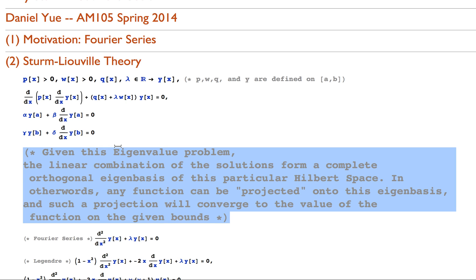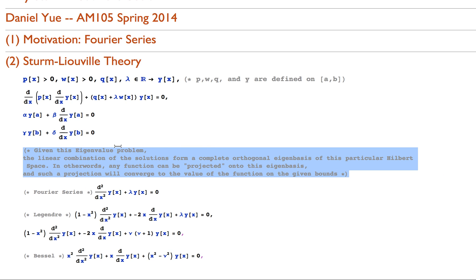Note that the functions have to be defined on a to b with some boundary condition involving a linear combination of the function and its derivative at that point. This is kind of cool. We know that works in Fourier series, we've seen it work before, but we're actually going to look at a couple of examples that aren't Fourier series that are pretty famous, known as Legendre and Bessel functions.